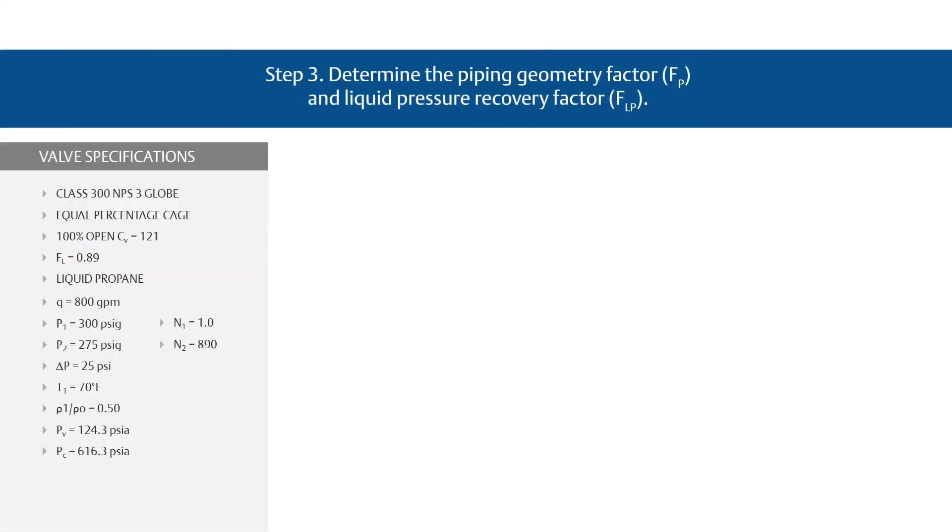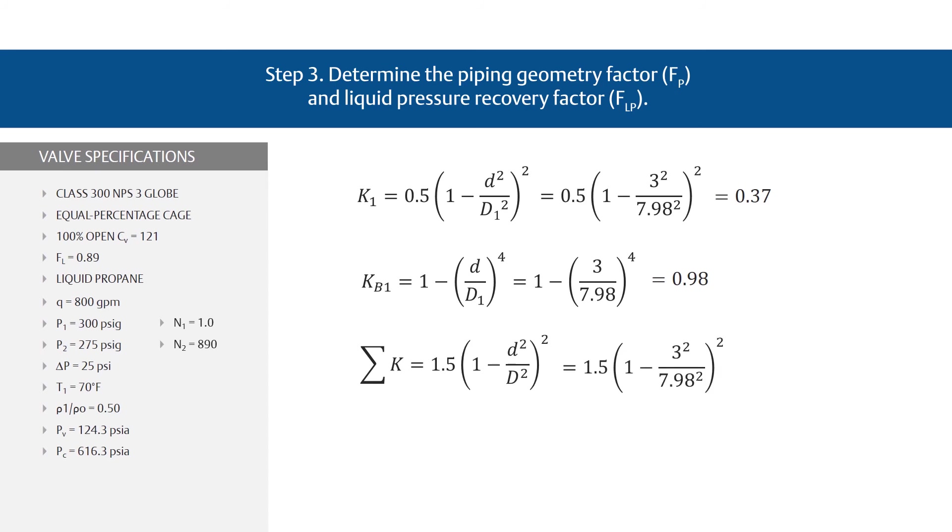Step 3, determine the piping geometry factor, or F sub P, and the liquid pressure recovery factor, or F sub LP, adjusted for the attached fittings. First, find the necessary resistance coefficients needed when the upstream and downstream pipe sizes are the same. Use the K1 equation and plug in your variables for a result of 0.37. Now use the KB1 equation and enter your variables for a result of 0.98. And use the sigma K equation and insert the variables for a result of 1.11.